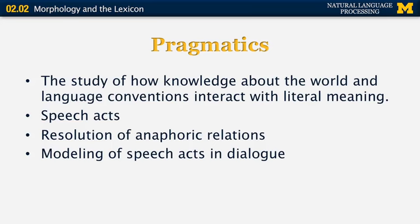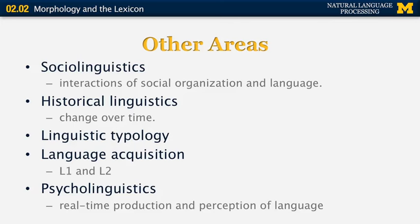The next level of study in linguistics is pragmatics — the study of how knowledge about the world and language conventions interact with literal meaning. It covers speech acts, resolution of anaphoric relations such as pronouns, and modeling of speech acts in dialogue. Other areas of linguistics include sociolinguistics, historical linguistics, linguistic typology, language acquisition of first and second language, and psycholinguistics — the study of how people produce and perceive language in real time.